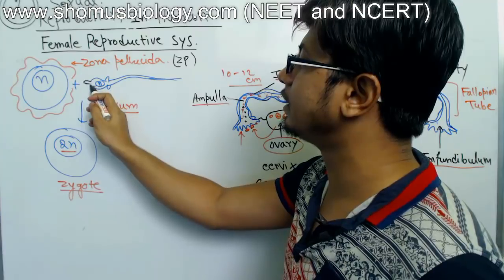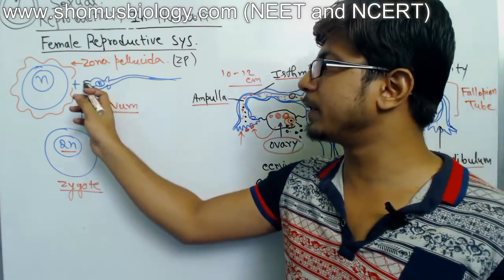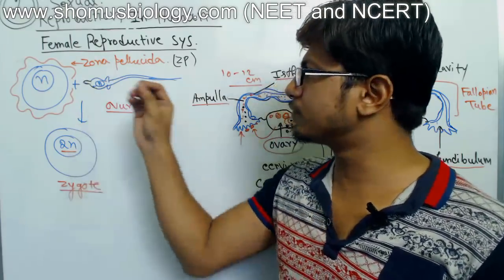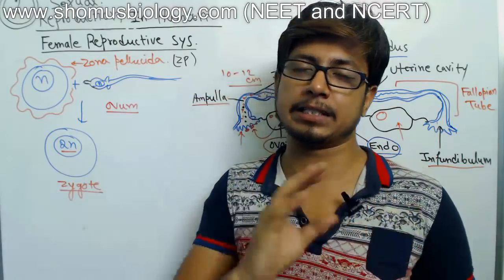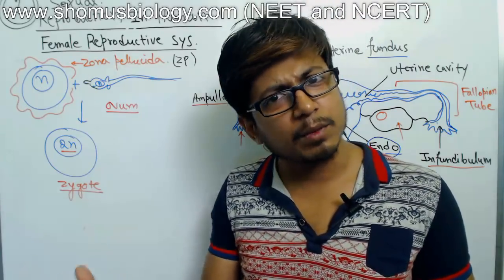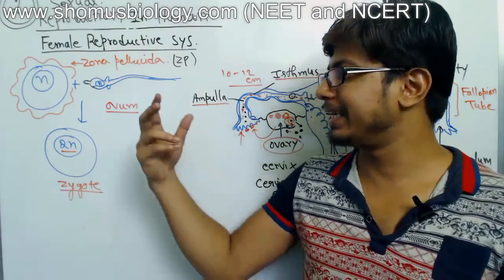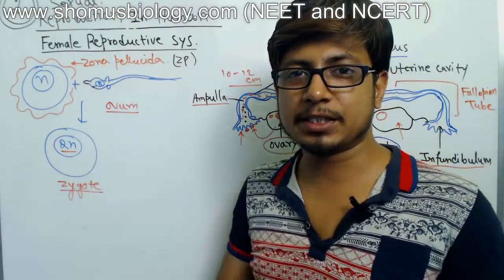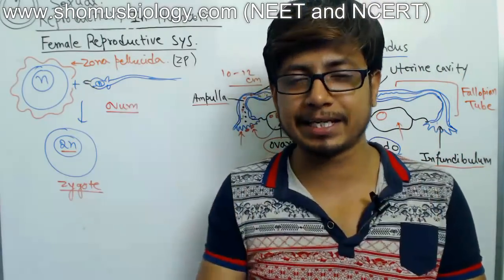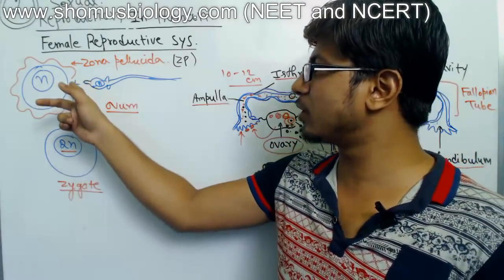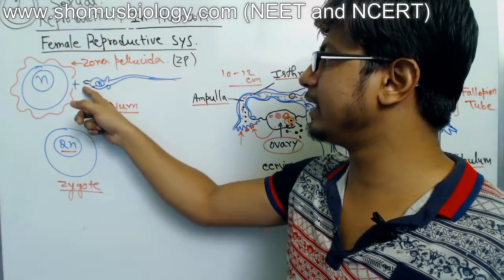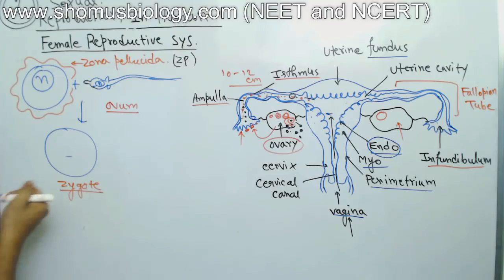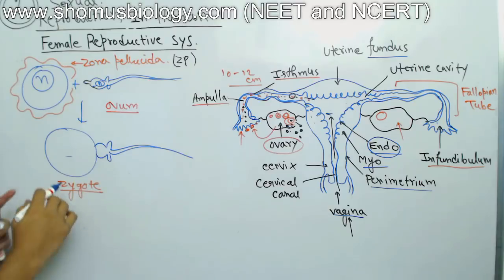The sperm needs to first degrade the zona pellucida. If you look at the structure of a sperm, there is a little extension at the front face of the sperm known as the acrosome. This acrosome contains the Golgi apparatus with many vesicles filled with hydrolyzing enzymes — specifically proteolytic enzymes. These enzymes can destroy proteins and break down the connective layers in the membrane, destroying the zona pellucida proteins.